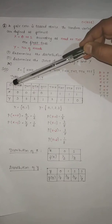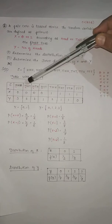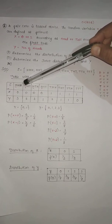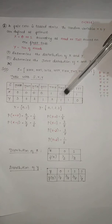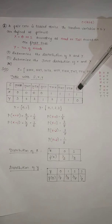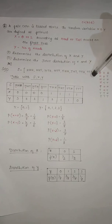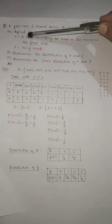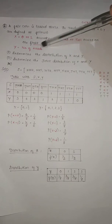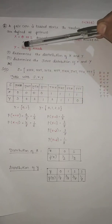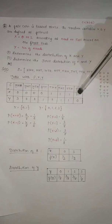Y represents the number of heads. The first outcome HHH has three heads, so Y = 3. The next outcome HHT has two heads, so Y = 2. Continuing: two heads, one head, two heads, one head, one head, and no head — so Y = 0 for TTT. Count the number of heads for each outcome and write that value.